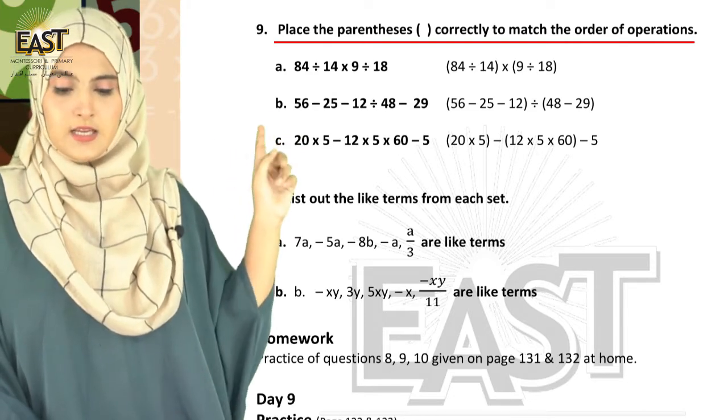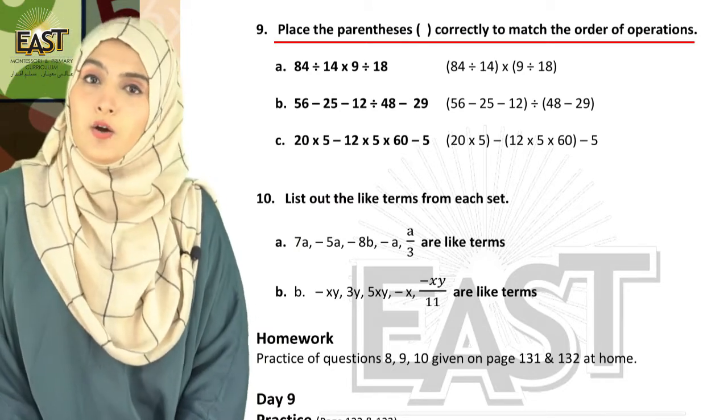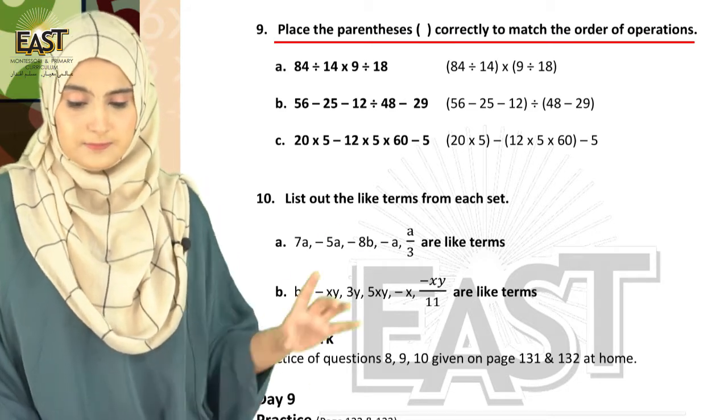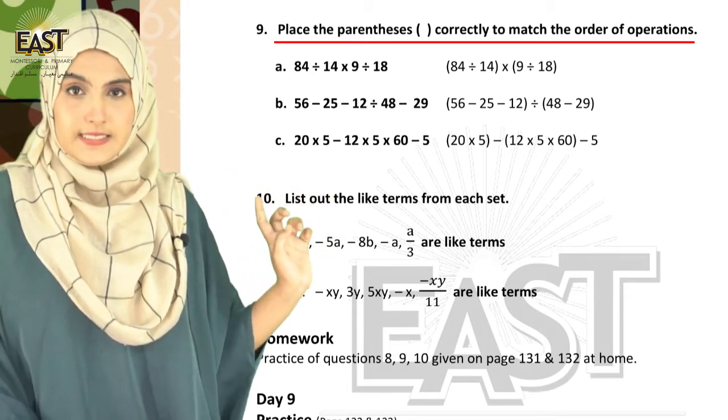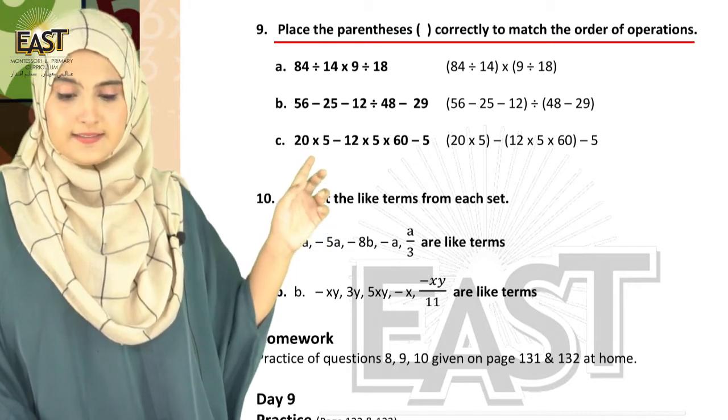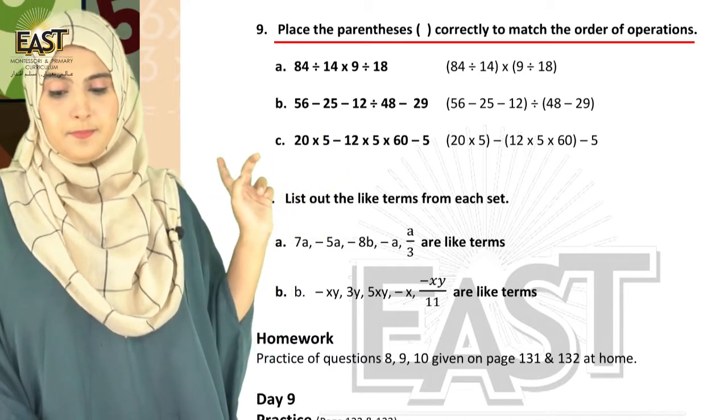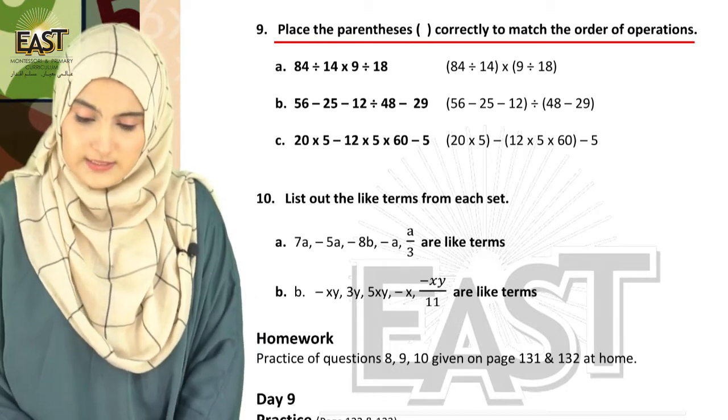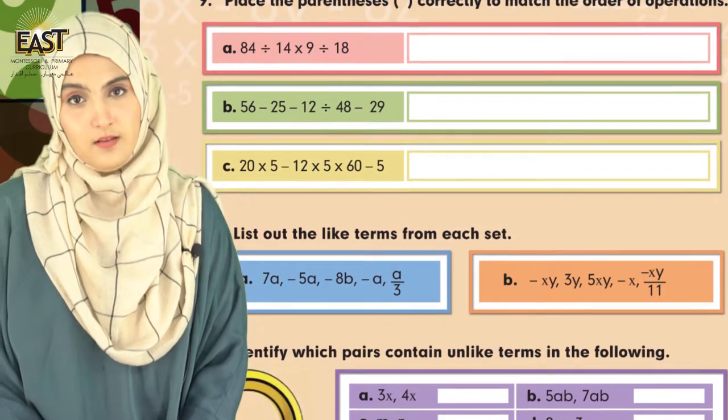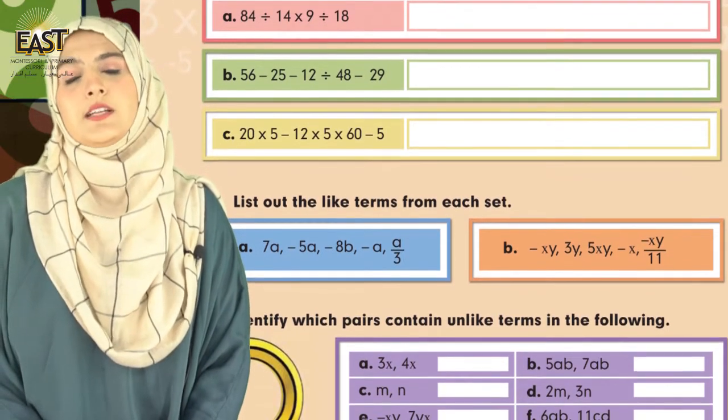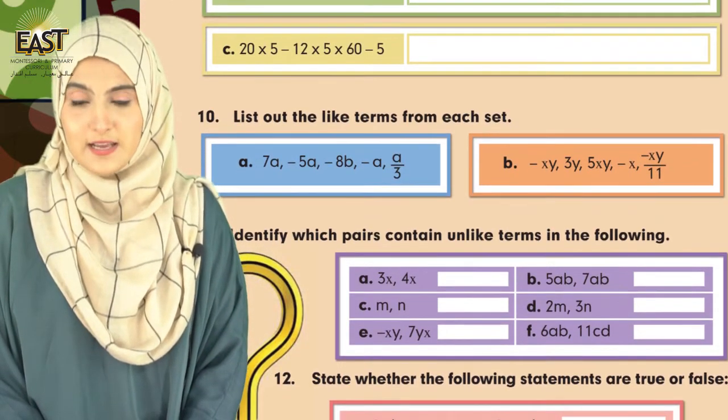You have to solve this question as well. 20 times 5 minus 12 multiplied by 5 multiplied by 60 minus 5. This is a big question and you all have to solve this as well. Do you guys want to do this at home by yourself? Yes, this is better. Do it at your home. Very easy question. There's a slight difference here - you have to identify that and complete it.